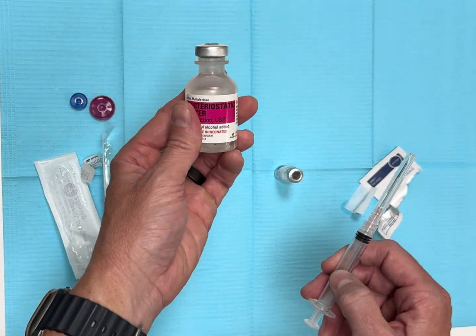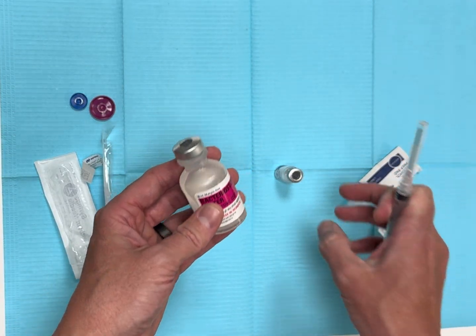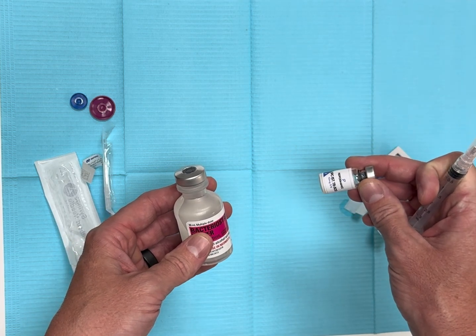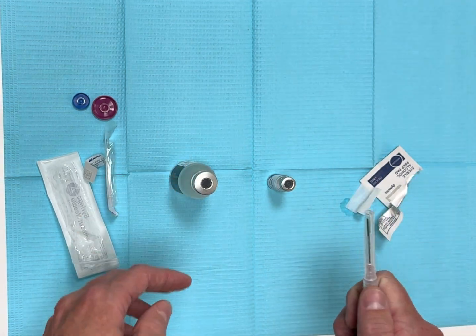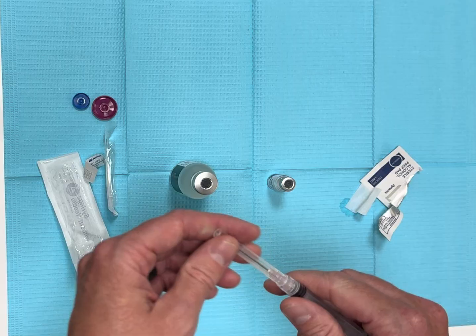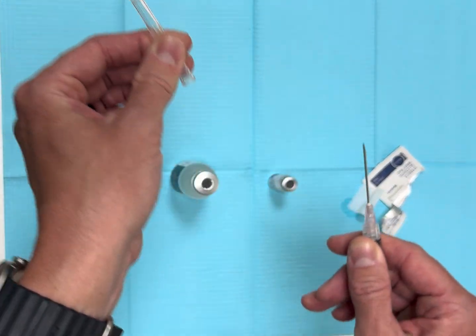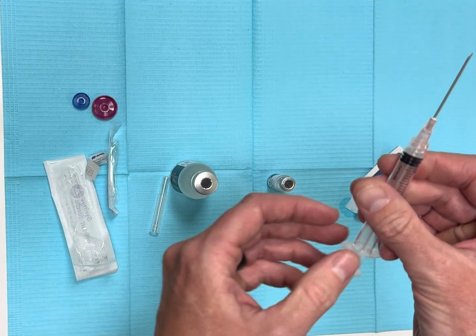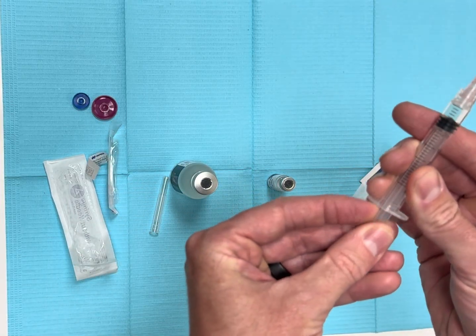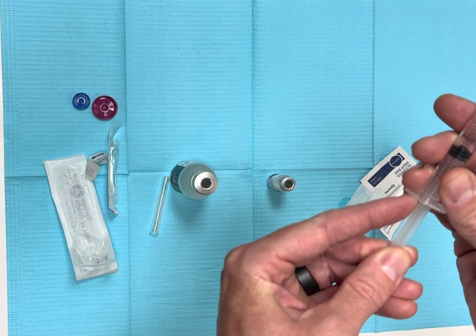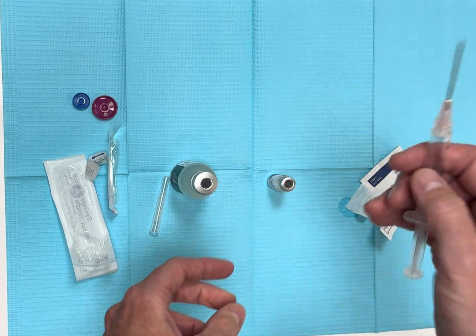what we want to do is take the correct measurement of bacteriostatic water and put it into your peptide vial. For that you want to see your dosing guidelines. We're going to take the cap off the mixing syringe and you're going to move the plunger down to the number of mls of water that you're going to put into it.